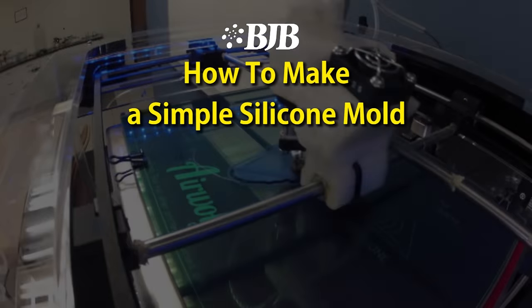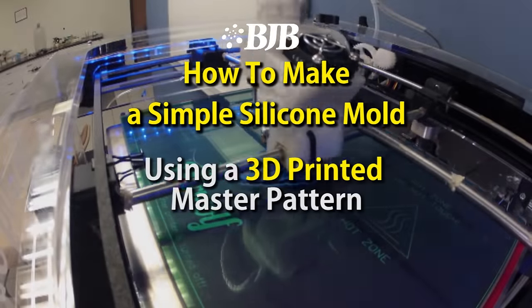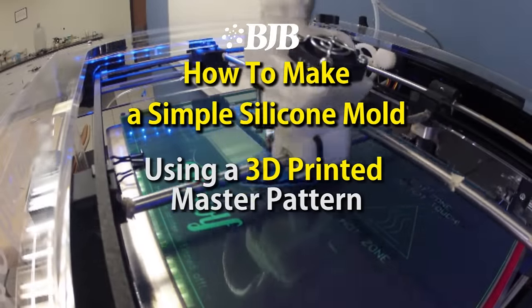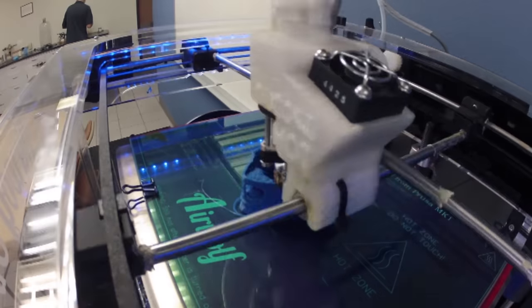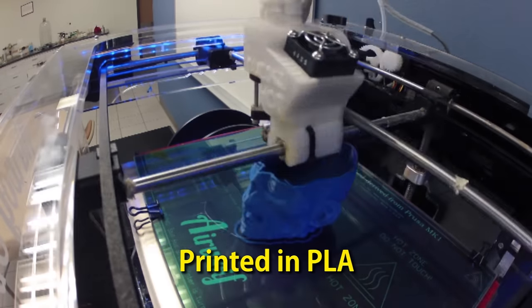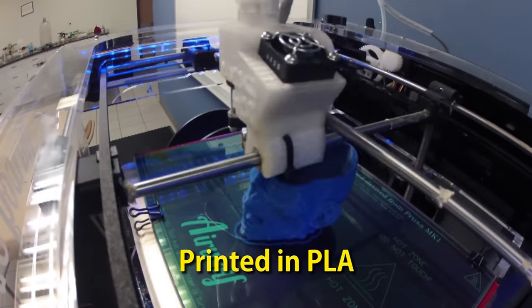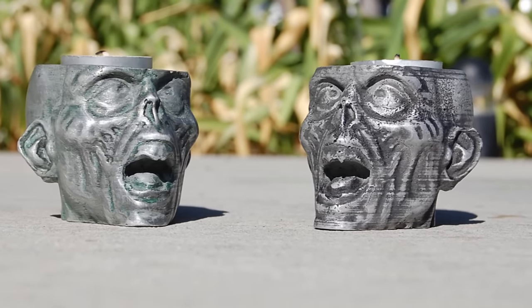Welcome back to another mold making video from BJB. We decided to do something simple and fun just in time at the making of this video for Halloween. Using a 3D printed zombie head, we'll make some really cool simulated metal candle holders.